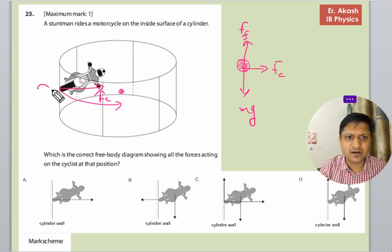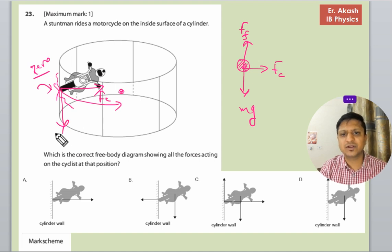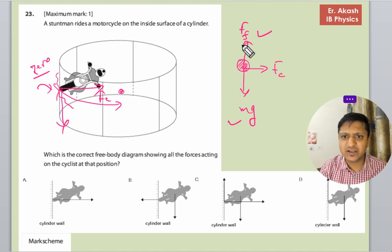Suppose if there is some oil on this surface and friction is zero or friction is negligible, this body will come down. So frictional force and mg, they are equating each other and the body is moving in the same path.